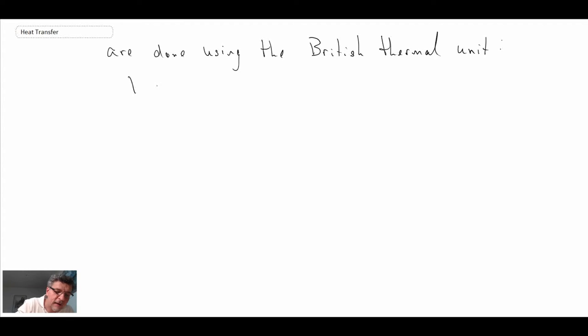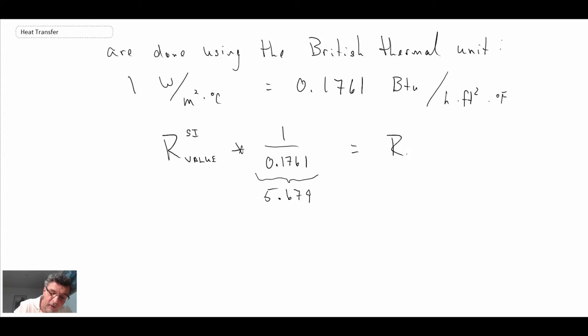And the conversion is that. So if we want to compute an R-value in SI, we would have to multiply by 1 over 0.1761, which is 5.679. And that would equal the R-value, and in non-technical lingo, what I'm going to call it is R-value from a hardware store.